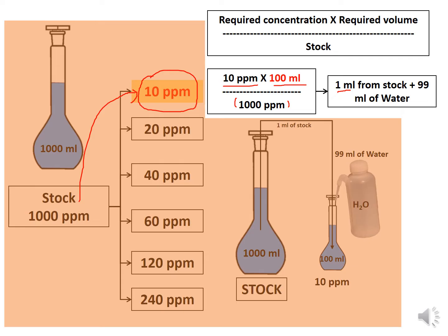So we take 1 ml of solution from the 1000 ppm stock and mix it with 99 ml of water. Since our required volume is 100 ml, adding 99 ml of water makes it up to 100 ml, which gives 10 ppm of the required concentration.